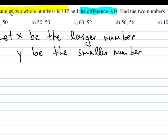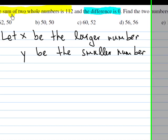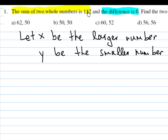Using the first assumption that the sum of those numbers is 112, we can write x plus y is 112. And since we are also given that the difference is 0, that means larger number minus smaller must be 0.